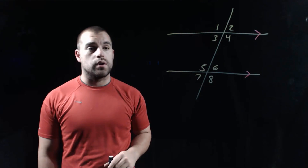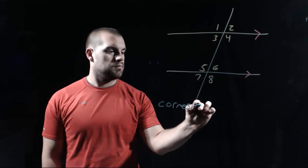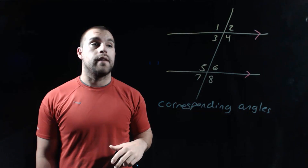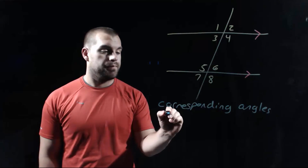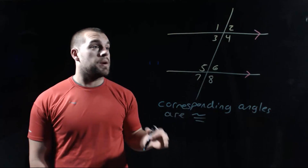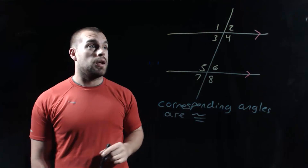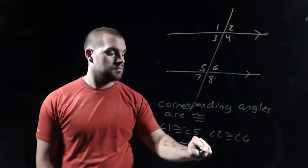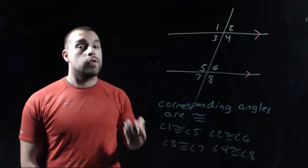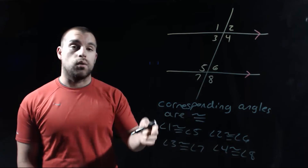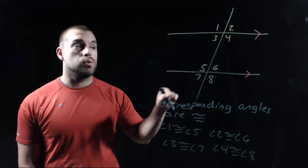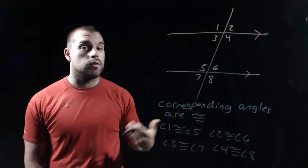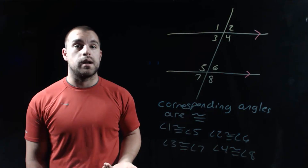If we start with our corresponding angles, the relationship they're going to have is that they are congruent. So if we take a look at our picture, there are four pairs of corresponding angles, and all of those pairs are congruent. So angle 1 is congruent to angle 5, angle 2 is congruent to angle 6, 3 and 7 are congruent, and also 4 and 8 are congruent because they're corresponding angles.